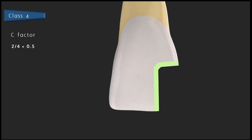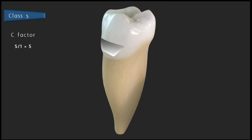In a class 5 tooth preparation with a specific box-shaped cavity, the C factor is similar to that of class 1, so we have to go for incremental buildup of composite. However, whenever it is a cervical abrasion or a shallow lesion, we can go for a single-increment buildup — the entire restoration can be done with a single increment of composite.